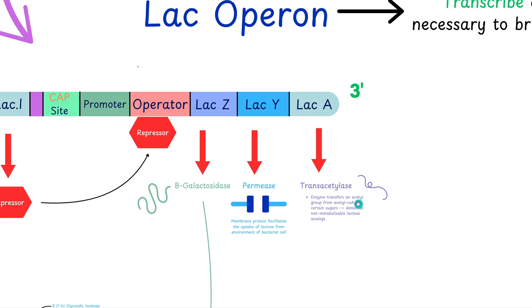While transacetylase isn't as crucial as beta-galactosidase and permease, it prevents the buildup of toxic lactose analogues in E. coli cell.